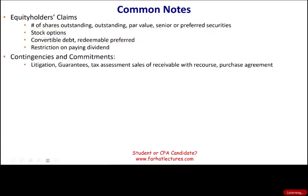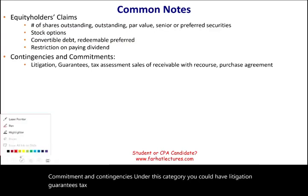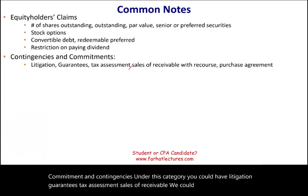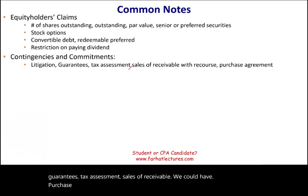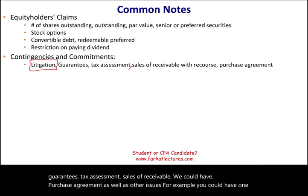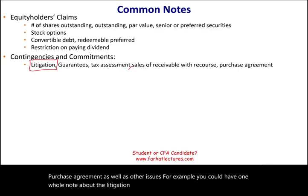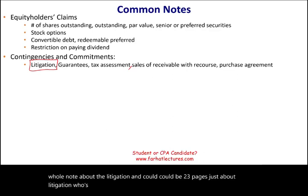Commitments and contingencies — under this category you could have litigation, guarantees, tax assessments, sales of receivables, purchase agreements, and other issues. For example, you could have one whole note about litigation that could be two or three pages — who is suing, why they're suing, whether you're guaranteeing the loan of others, and so on.